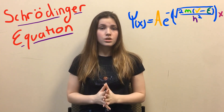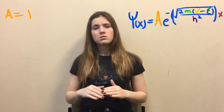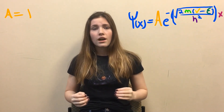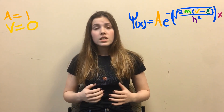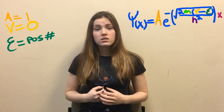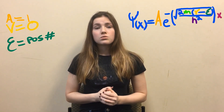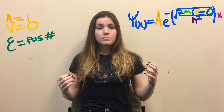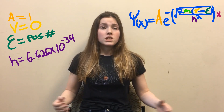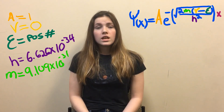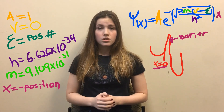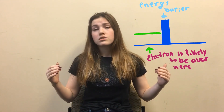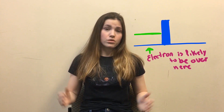Mathematically, we can explain this with the Schrödinger equation. In the Schrödinger equation, we have A, which is a constant that doesn't really matter in this case. We have V, which is potential energy, which also doesn't matter before the barrier. We have E, which is the amount of energy that the electron has — this is going to be positive. And we have H, Planck's constant. M is the mass of the electron, which is also a constant. In this case, X is going to be negative because we are before the barrier, and we consider the barrier zero. So when we calculate this out, it gives us a high positive probability that the electron exists before the barrier.